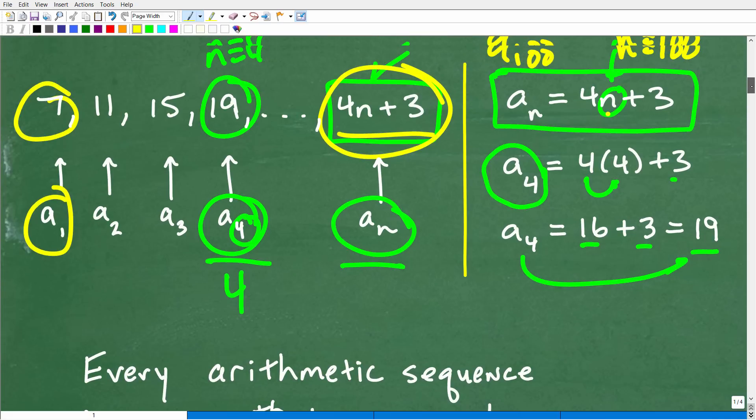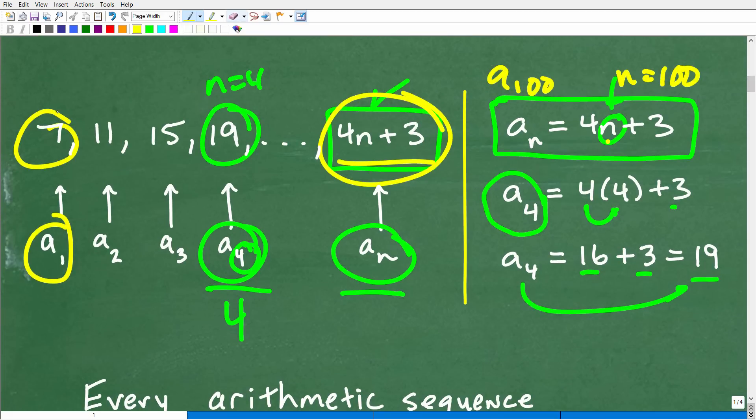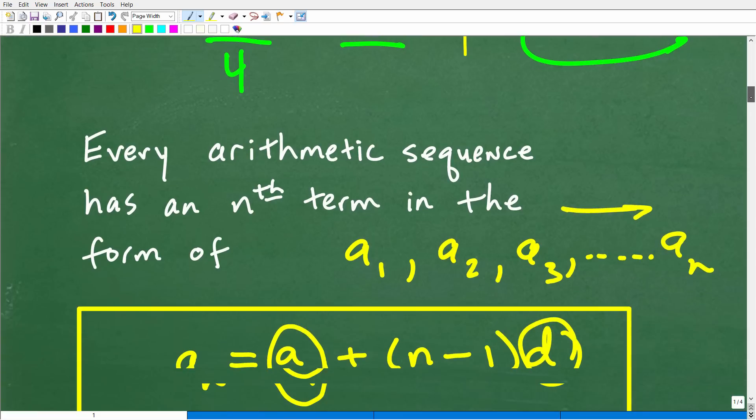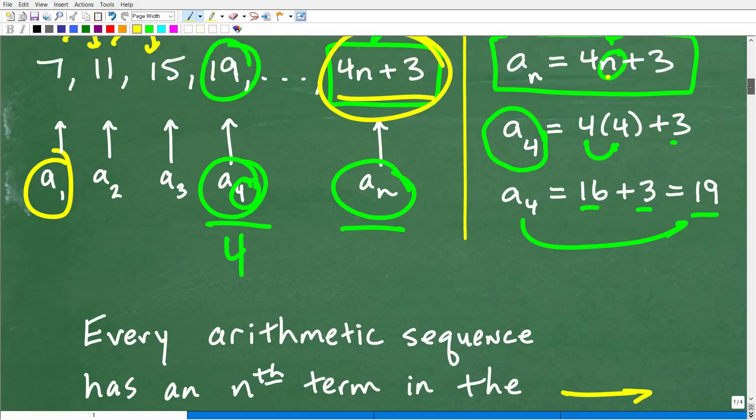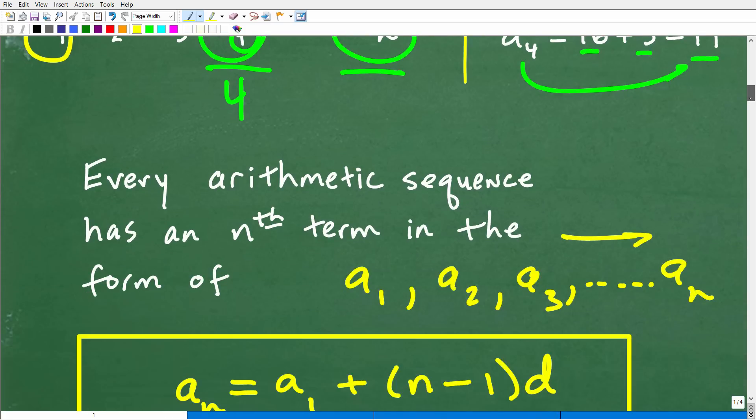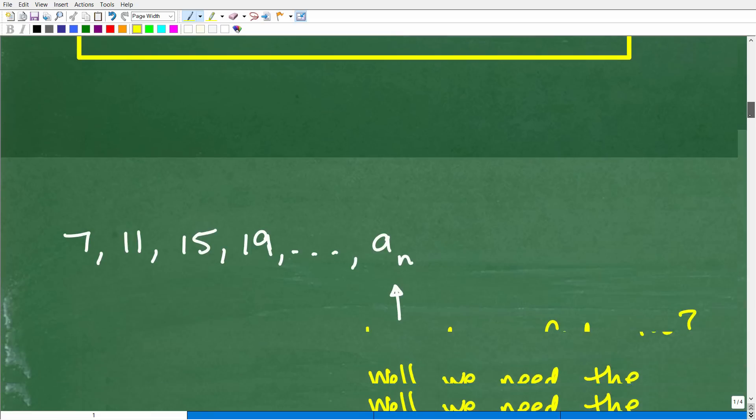And then d is the common difference. Now, if you recall, I told you that the common difference is the value that is separating the numbers in this pattern, which is 4. We're adding 4. So the common difference here is 4. So really, this is a pretty straightforward formula to use. So let's go ahead and plug in the values here and get the actual a sub n formula, which, of course, we already know, which is 4n plus 3. So let's go ahead and do this right now.